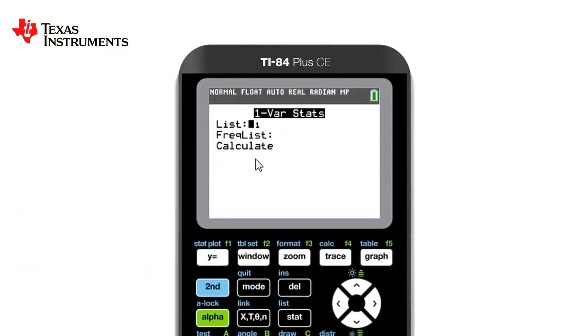As you can see in one var stats, the default setting for list is list one. This is perfect as this is where our data is stored. We don't need to worry about frequency list as we only have one piece of data for each person. So we arrow down to calculate and press enter.